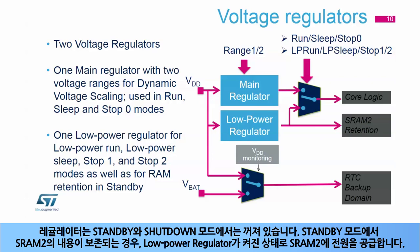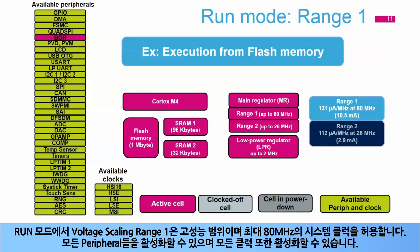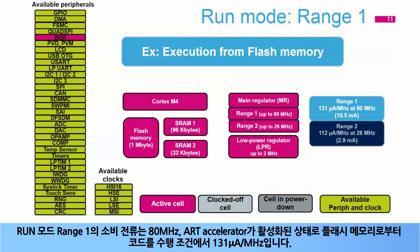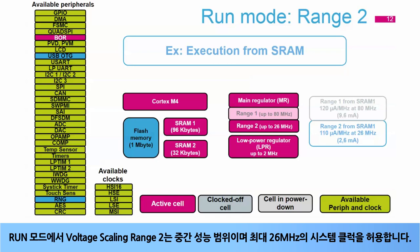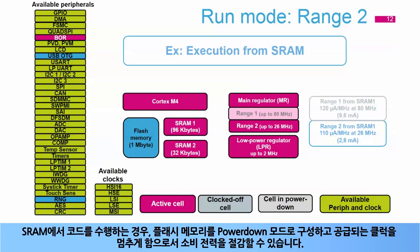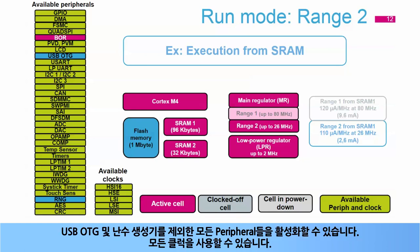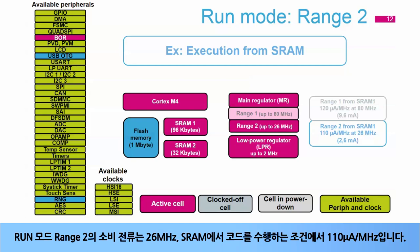In run mode, voltage scaling range 1 is the high performance range, allowing a system clock up to 80 MHz. All peripherals and clocks can be enabled. The run mode range 1 consumption is 131 microamps per MHz at 80 MHz from flash memory with the ART accelerator enabled. In run mode, voltage scaling range 2 is the medium performance range, allowing a system clock up to 26 MHz. When executing from SRAM, the flash consumption can be saved by configuring flash in power-down mode and gating its clock off. All peripherals can be activated except USB OTG and the random number generator. The run mode range 2 consumption is 110 microamps per MHz at 26 MHz from SRAM.